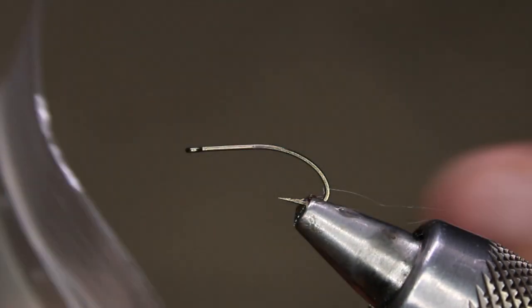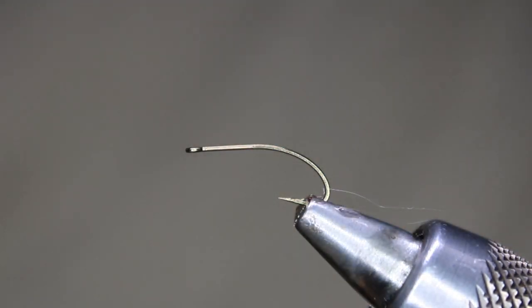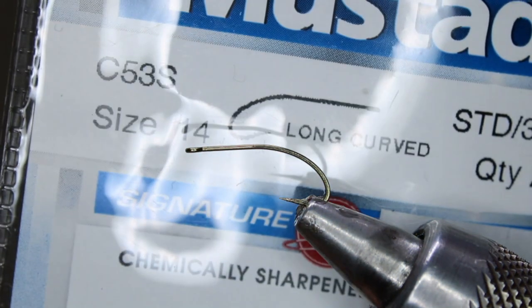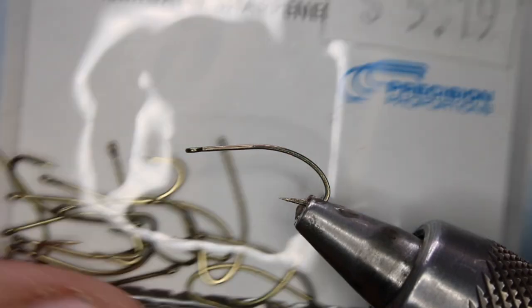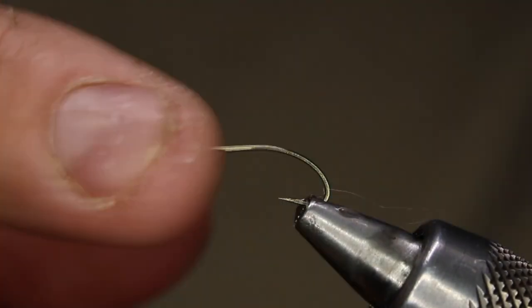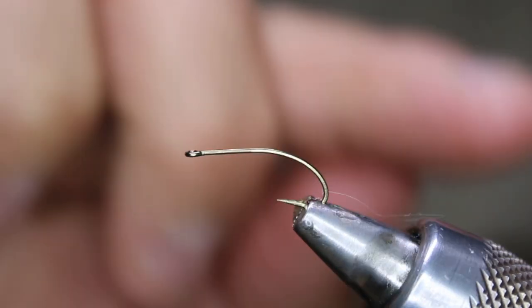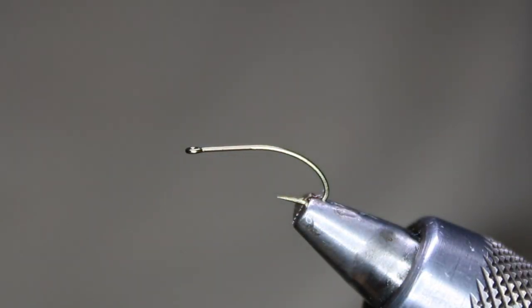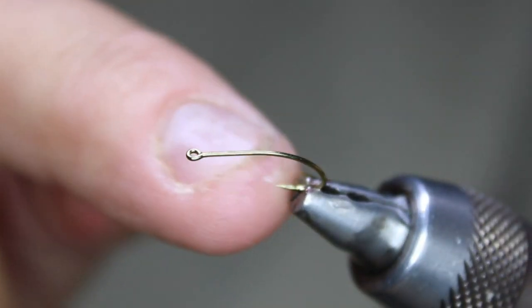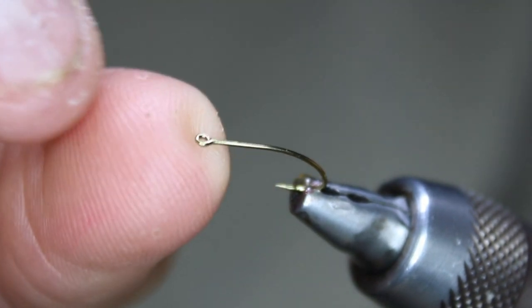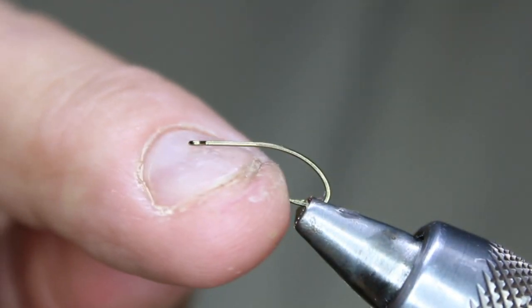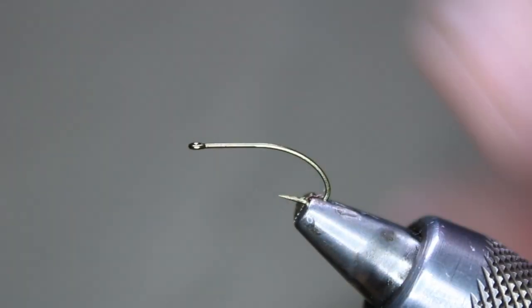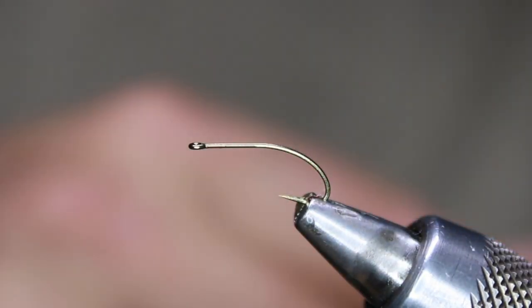They bend too easy. I'm not a big fan of the gap in them either. Even this one here, this is the Mustad version of it, the C53S. I'm not a huge fan of it either, but I like this shape. I haven't found another hook manufacturer that makes this gap a little bit bigger. I'd like to have that gap in here, the hook gap, a little bit bigger. I'd feel more comfortable with that, but it's the way it is.